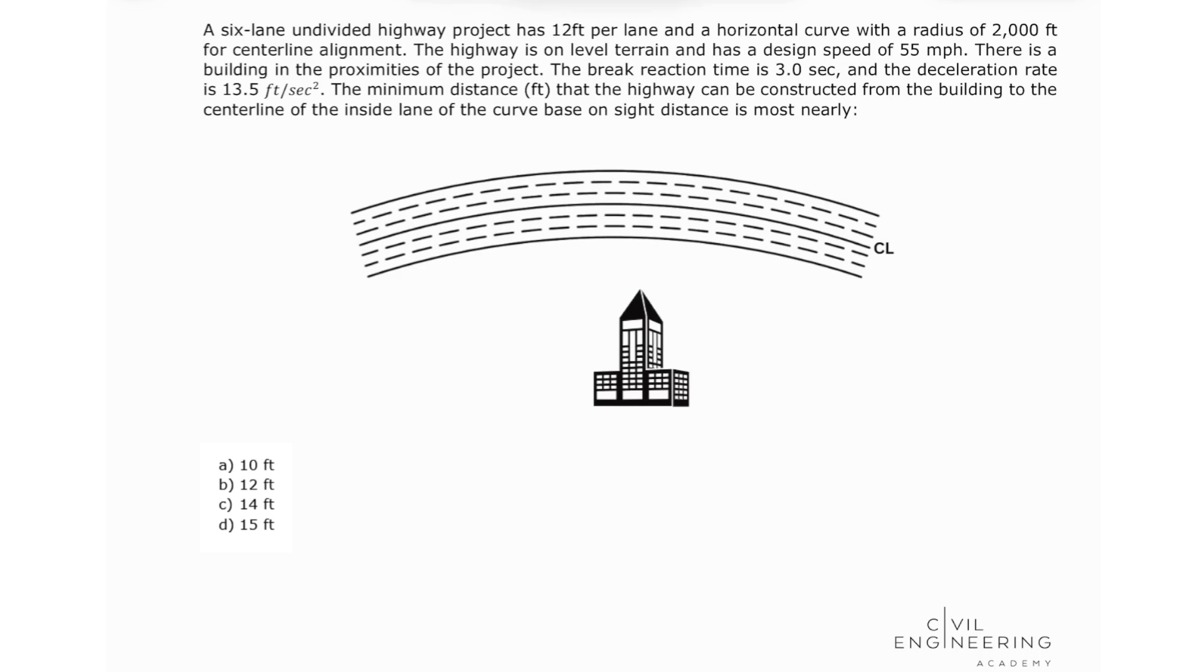A six-lane undivided highway project has 12 feet per lane and a horizontal curve with a radius of 2,000 feet for centerline alignment. The highway is on level terrain and has a design speed of 55 miles per hour. There is a building in the proximities of the project. The brake reaction time is 3 seconds and the deceleration rate is 13.5 feet per second squared. The minimum distance in feet that the highway can be constructed from the building to the centerline of the inside lane of the curve based on sight distance is most nearly.